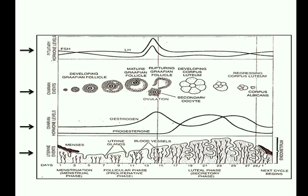During the menstrual phase, the level of LH hormone decreases. When LH level decreases, the wall of the endometrium degenerates. LH stimulates the corpus luteum, which produces progesterone. When LH decreases, the corpus luteum converts into corpus albicans, so progesterone level also decreases. When progesterone decreases, the wall of the endometrium breaks down and bleeding starts — this is menstruation.